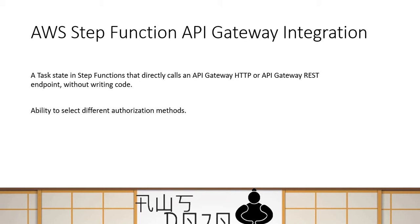In this case, your Step Function is a kind of a client body which is going to make a call to API Gateway. There are certain ways you can configure authorization between your Step Function state machine workflow and the API in API Gateway.